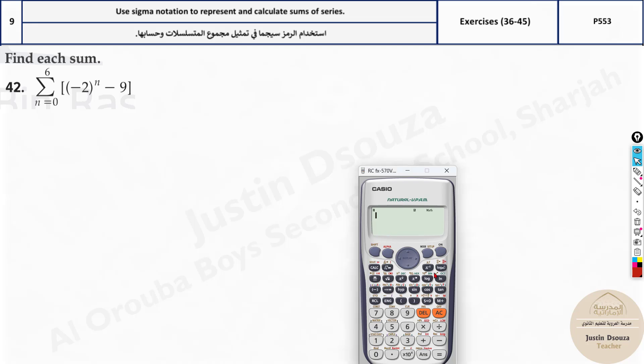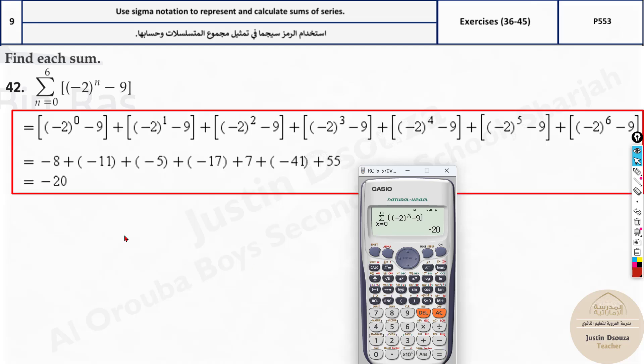Let me do this: shift and log symbol. Now what you do is use the bracket, minus 2, close the bracket, square it up and use the variable x, then subtract it from 9. Now it starts at 0, ends at 6, and the answer is negative 20.